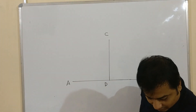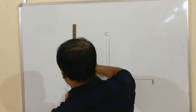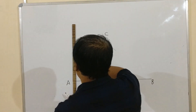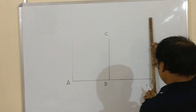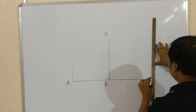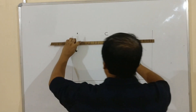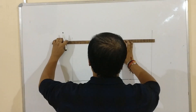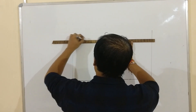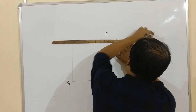To complete the rectangle, draw a vertical line from point A, similarly a vertical line from point B, and a horizontal line from point C. This completes the rectangle.